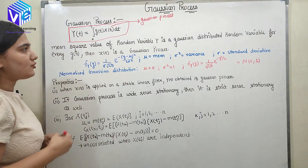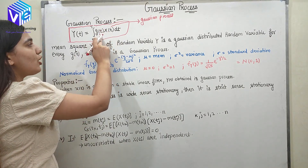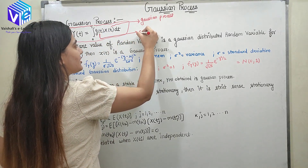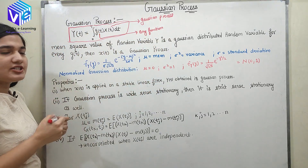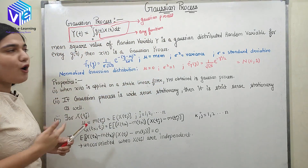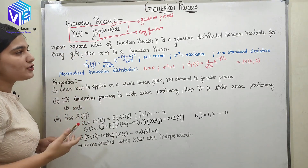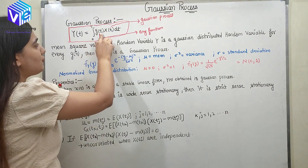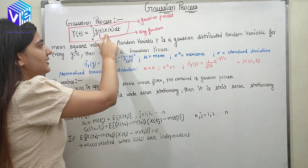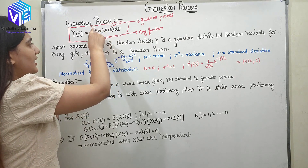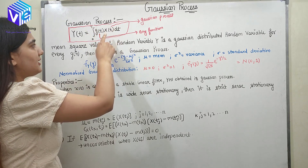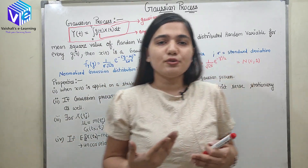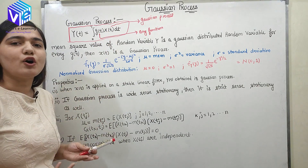What is this equation? Here I have gt — it is also a random process, and yt is also a random process. I can take gt to be any function. For any function gt, if the mean square value of y comes out to be Gaussian distribution — for any value of gt — if I consider xt to be a Gaussian distribution, the integration from 0 to t of gt times xt dt will give me some yt, and the mean square value of yt would be a Gaussian distribution. That is when xt is called a Gaussian process.